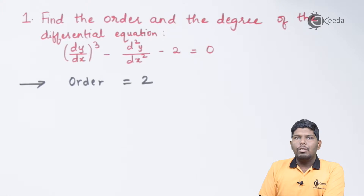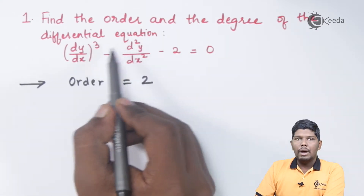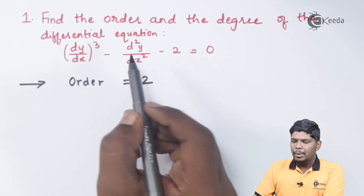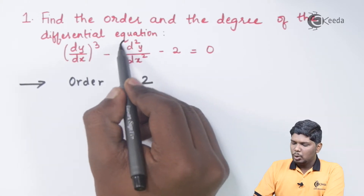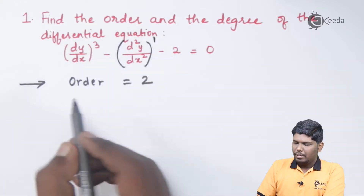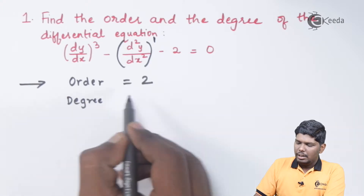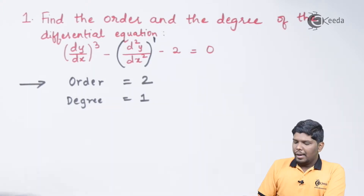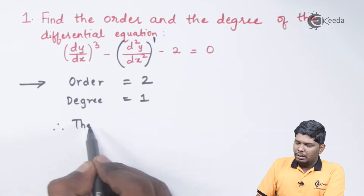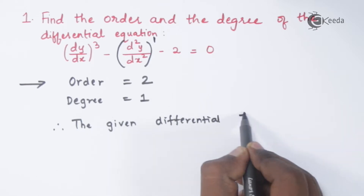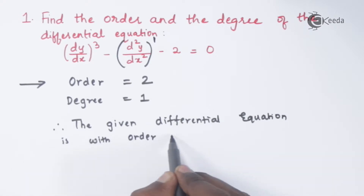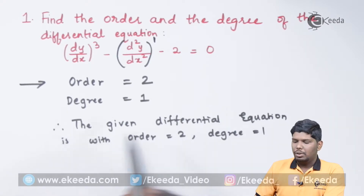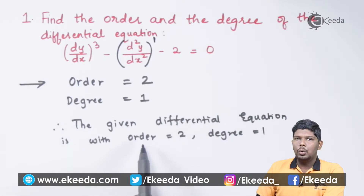To find the value of degree, we must make sure that none of the powers are in fractional or radical form. We have only powers which are not in the form of fractions. The power of the highest order derivative d²y/dx² is 1, so the degree is equal to 1. Therefore, the given differential equation has order 2 and degree 1.